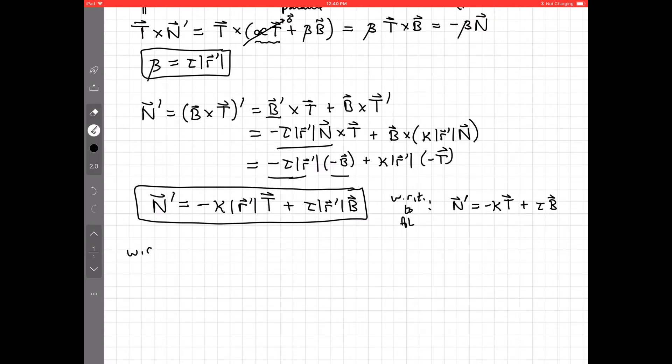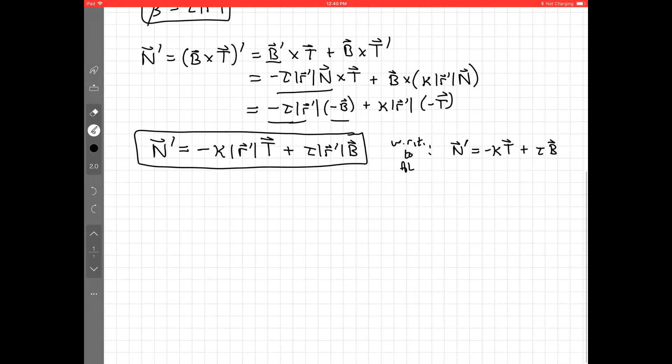with respect to arc length, we have a unit speed curve. With respect to arc length, this just looks like negative curvature times t and torsion times b. In fact, with respect, well,